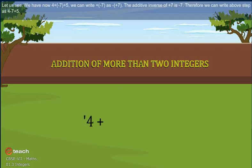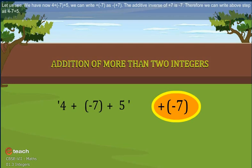We have now 4 plus bracket minus 7, plus 5. We can write plus bracket minus 7 as minus bracket plus 7. The additive inverse of plus 7 is minus 7.